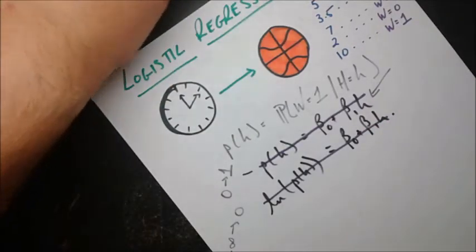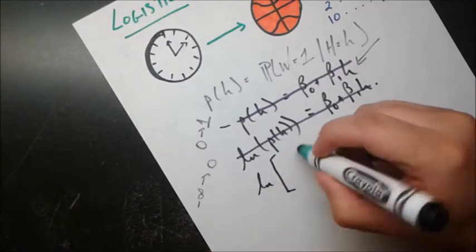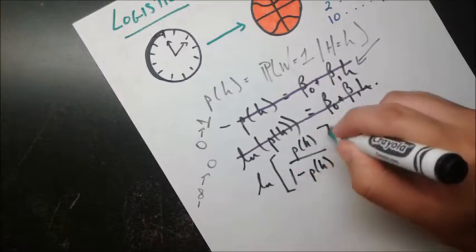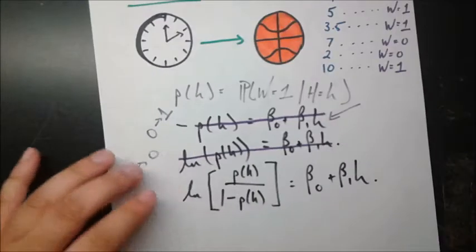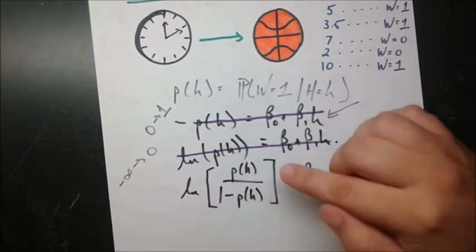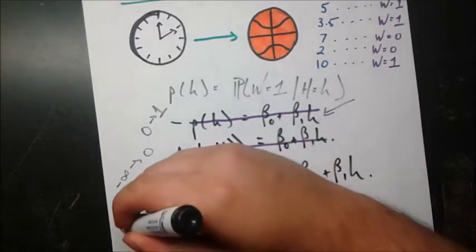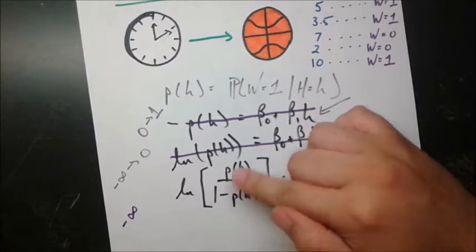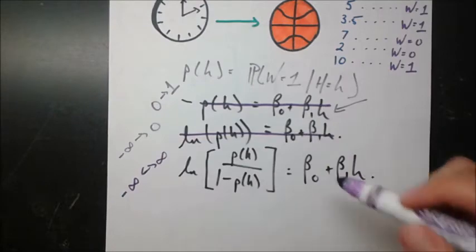Now let's try this model — it will look a bit obscure at first, but it meets the conditions we're trying to meet. We have the natural log of P of H divided by 1 minus P of H, modeled by our linear relationship beta naught plus beta 1 H. If P of H is at its minimum of 0, we get ln of 0, which is negative infinity. If P of H is at its maximum of 1, we get ln of 1 over 0, which goes to positive infinity. So this has a range from negative infinity to infinity, just as our linear function does.